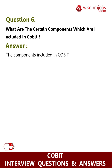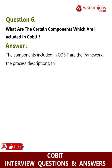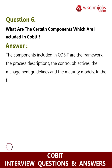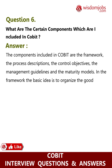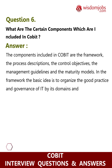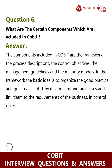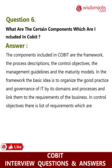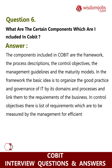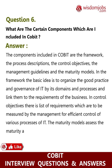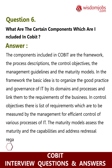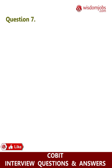Question 6: What are the components included in COBIT? Answer: The components included in COBIT are the framework, the process descriptions, the control objectives, the management guide, the guidelines, and the maturity model. In the framework, the basic idea is to organize the good practice and governance of IT by its domains and processes and link them to the requirements of the business. In control objectives there is a list of requirements to be measured by management for efficient control of various IT processes. The maturity models assess maturity and capabilities and address redressal regarding any gaps.